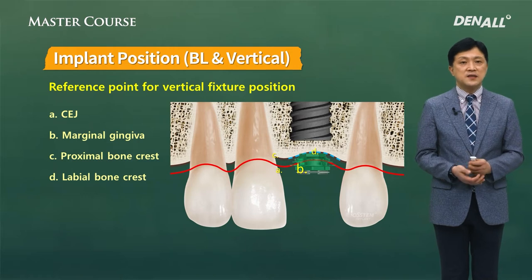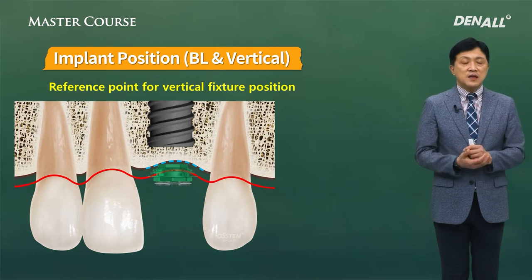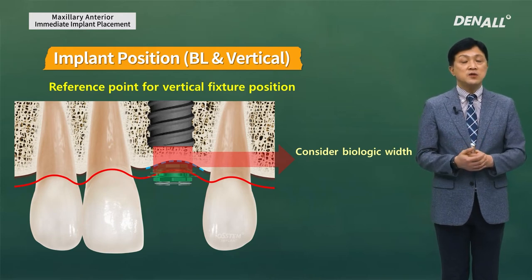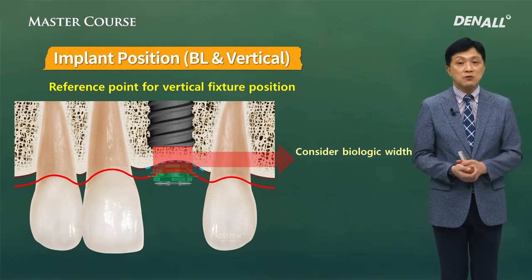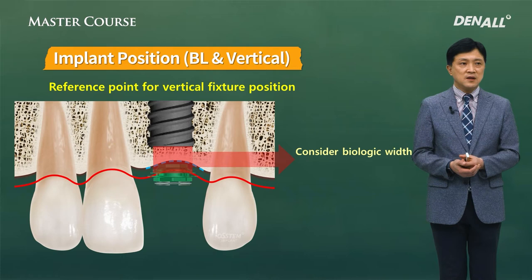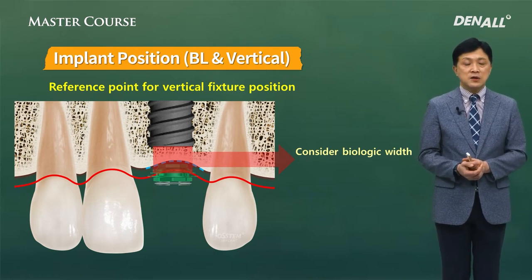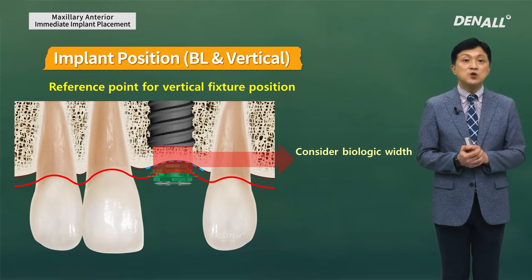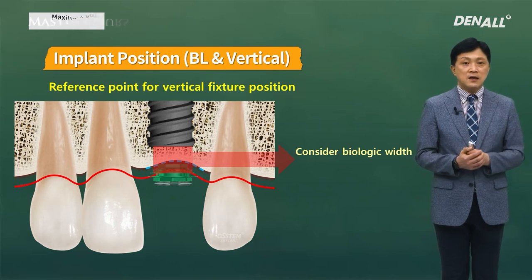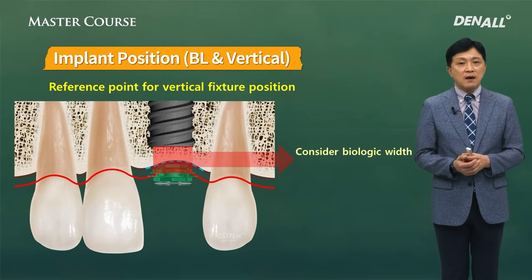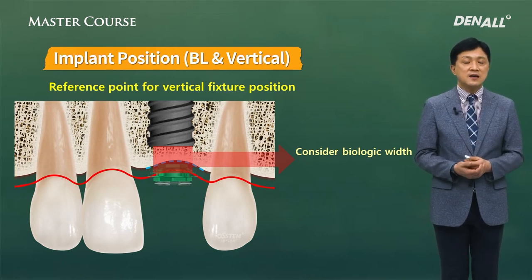How do we choose the reference points? It depends on case-to-case factors: biotype, bone loss, and whether there is a defect. For flapless surgery, the marginal gingiva can be the reference point. For flap surgery, the proximal bone crest needs to be the reference point for vertical implant positioning. These four reference points help determine vertical implant position. We need these reference points because we must consider biologic width — the implant biologic width of 4 mm is acceptable. From the top of the implant platform to the abutment junction, soft tissue should be present in this 4 mm gap for long-term implant stability.